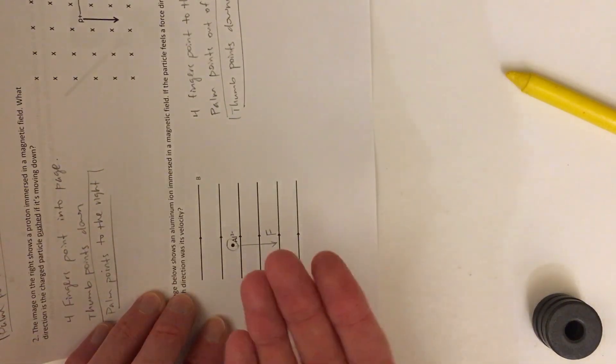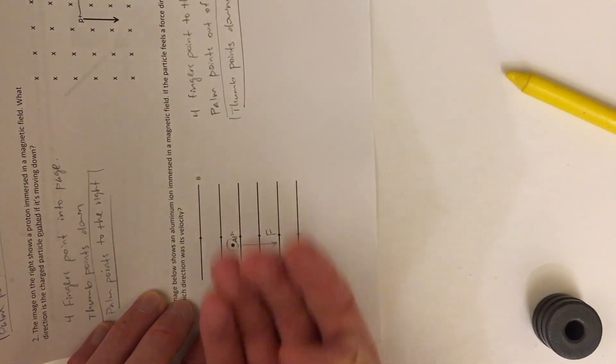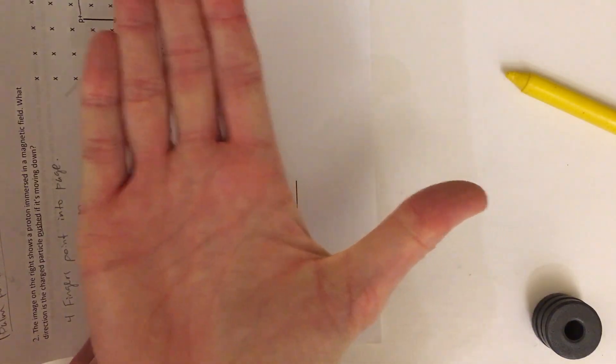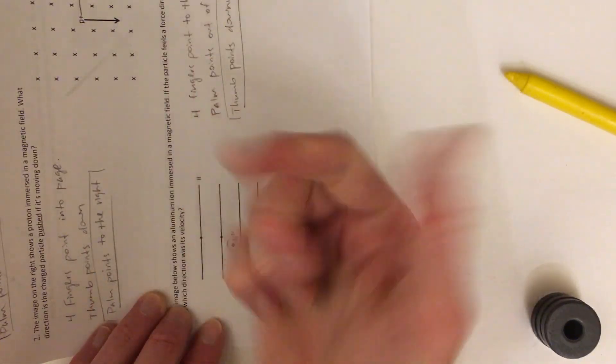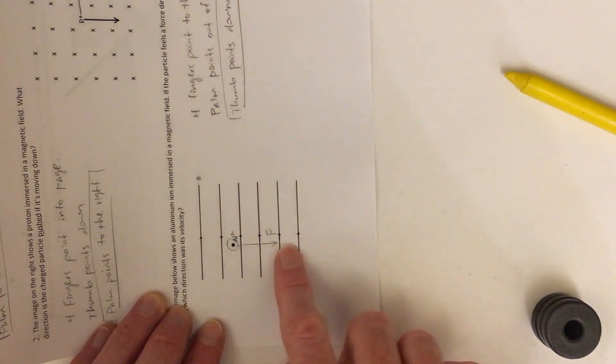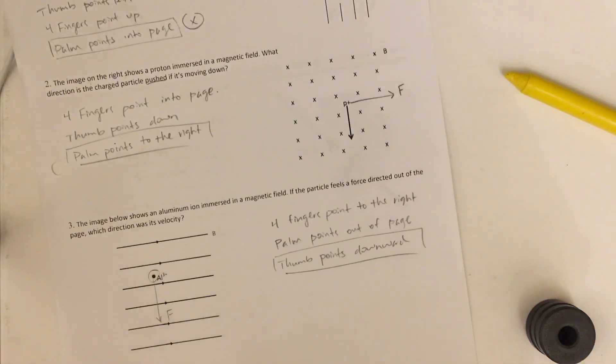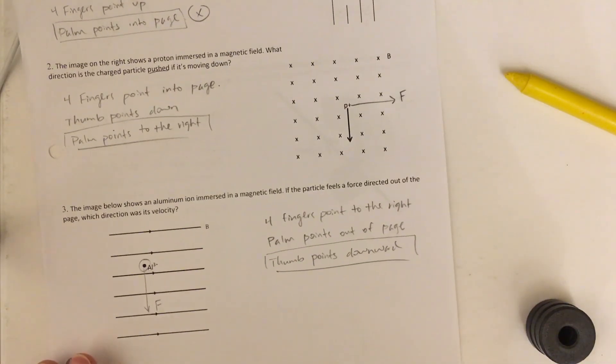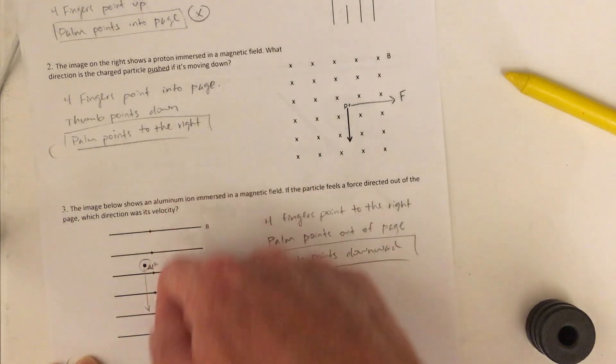Okay. Magnetic field lines are this way. The force is out of the page, and so my thumb points that way. So I've got particle velocity going down. And I mislabeled that. That should be a V for particle velocity going down.